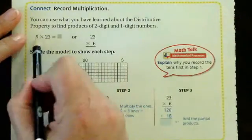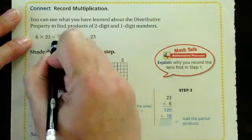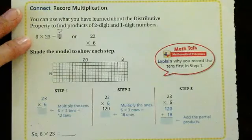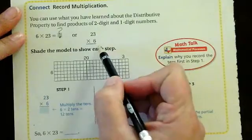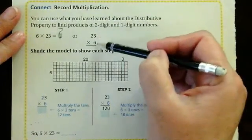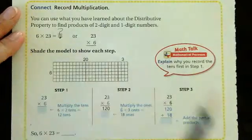So, this is a one digit by two digit multiplication problem and we need to find the product. You can either write it out this way or you can write it out this way. I prefer this way, makes more sense in my head, but if you like it this way, I say go for it.